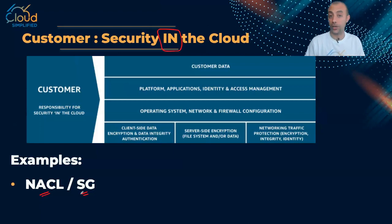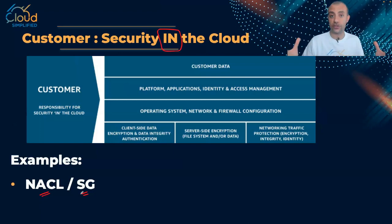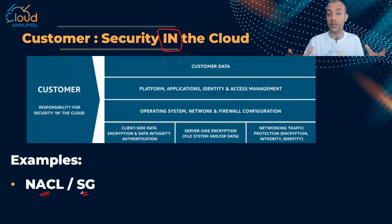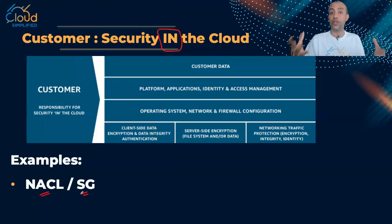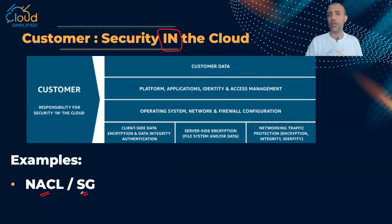Now, what if one of the customers went to their access list or security group and added a rule 'permit IP any any'? That means the customer opened their entire infrastructure to any traffic that might come from the internet. So if this customer gets attacked, who is responsible? Definitely this is a customer responsibility, because customers know their applications and networking requirements and need to specify which traffic to allow and which to deny.